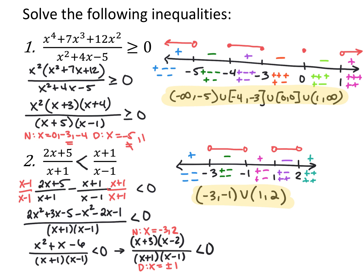So to summarize polynomial and rational inequalities: set one side equal to 0, simplify completely, factor completely, put anything that makes either numerator or denominator equal to 0 on your number line, decide open circles or closed circles, test your intervals, and then decide what intervals you want.